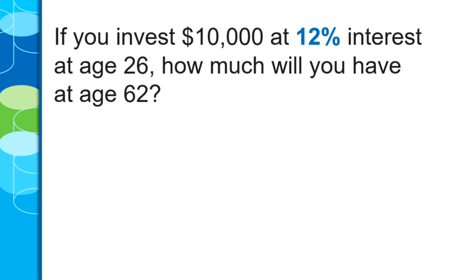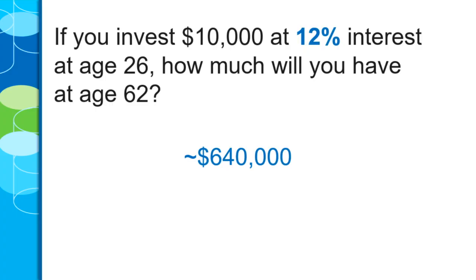Notice — the time is the same. All we're doing is increasing the interest rate. Let's go to 12% interest. Rule of 72: 72 divided by 12 is 6 years. Every 6 years your money doubles, and we've got 36 years — that's 6 doubling periods. Five doublings was $320,000, so the sixth doubling gets us to $640,000. That's from a $10,000 investment made in your mid-20s, and you're looking at over half a million dollars at retirement. That's the power of compound interest.